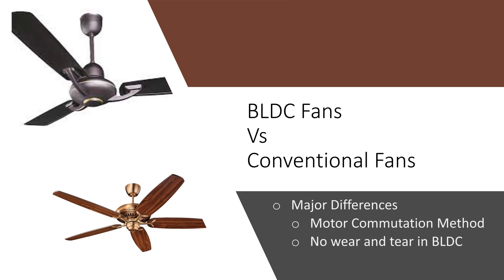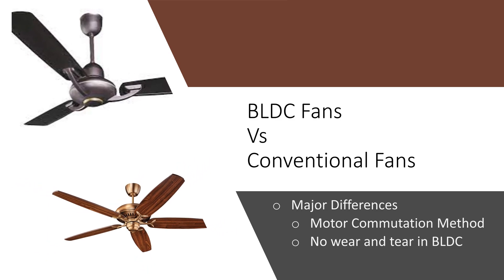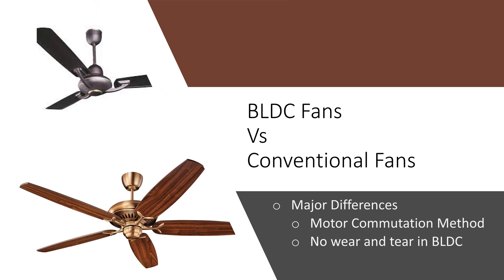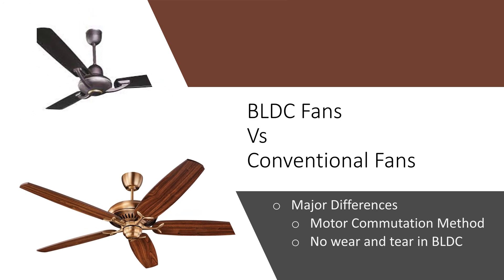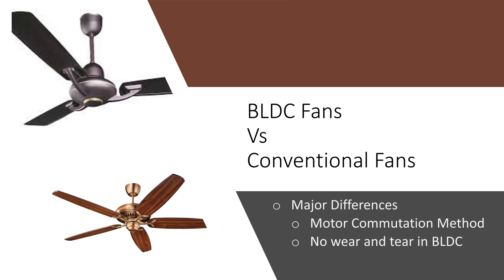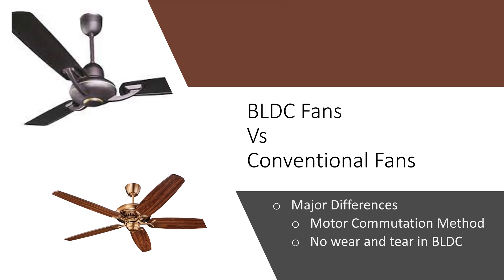One of the main differences between a BLDC fan and a normal fan is the difference in motor commutation method. Commutation means a technique used to change the direction of current flow in a motor. BLDC motor does not contain any mechanical contacts, so there is no wear and tear in long-term use.